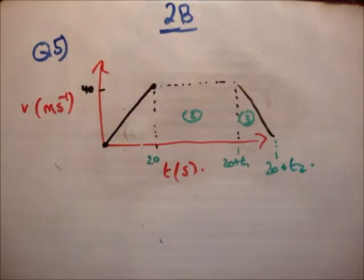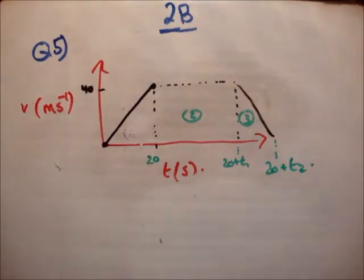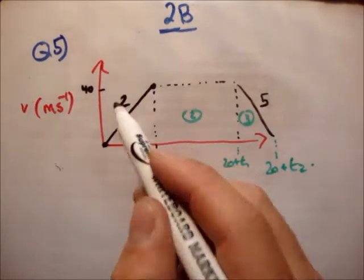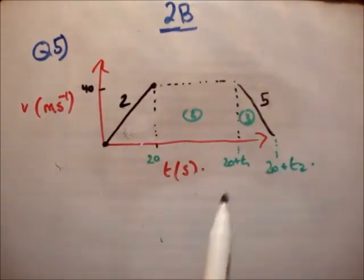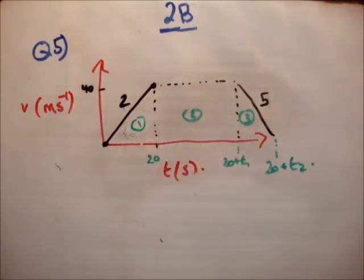In this video I'm going to continue on with exercise 2B of the book Fundamental Applied Mathematics. We're on question number 5 on page 49. It reads: a car accelerates from rest at 2 m/s² to a speed of 40 m/s. It then travels at steady speed and finally decelerates to rest with an acceleration of 5 m/s². So just draw out your graph as normal — we'll say there are regions 1 to 3.